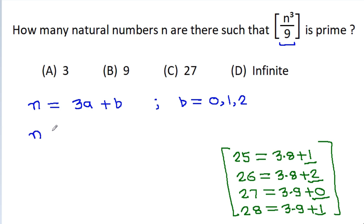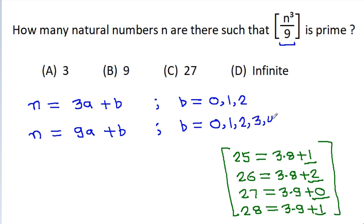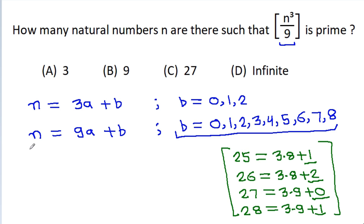We could also take n equal to 9a plus b, but in that case b would range from 0 through 8 — too many cases to handle. So instead we take n equal to 3a plus b.